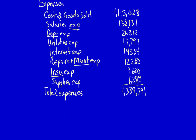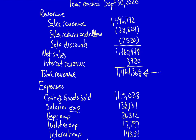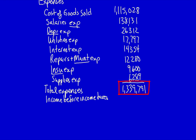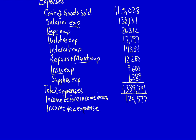Let's move on because we haven't finished yet. Now we have income before income taxes, which is the difference between total revenues of $1,464,368 and expenses of $1,339,791. So the income before income tax is $124,577. We now have to add income tax expense. From the listing we know this was $25,177. When we deduct the income tax expense from the income before income taxes, our net income is equal to $99,400.